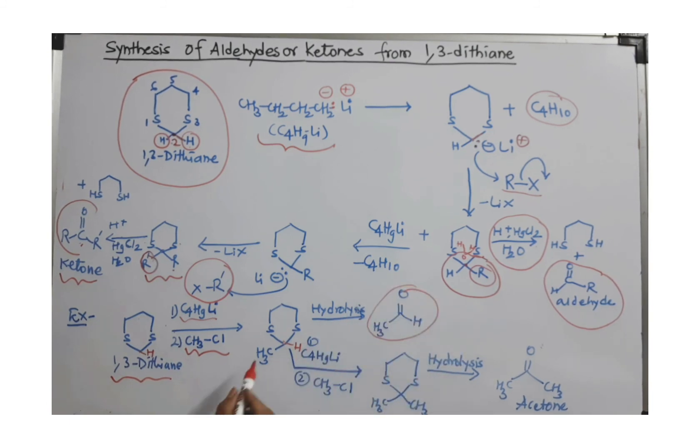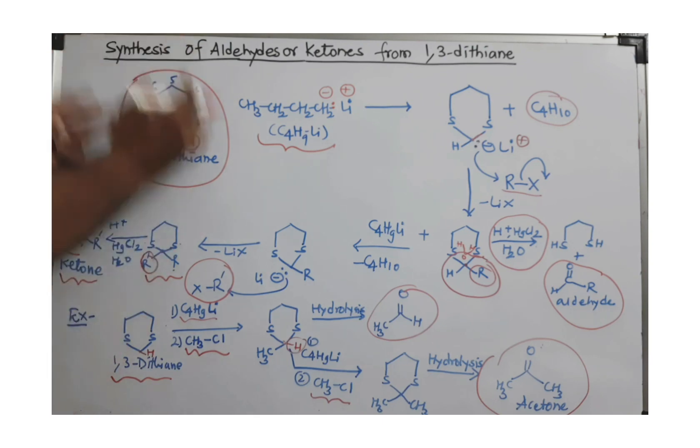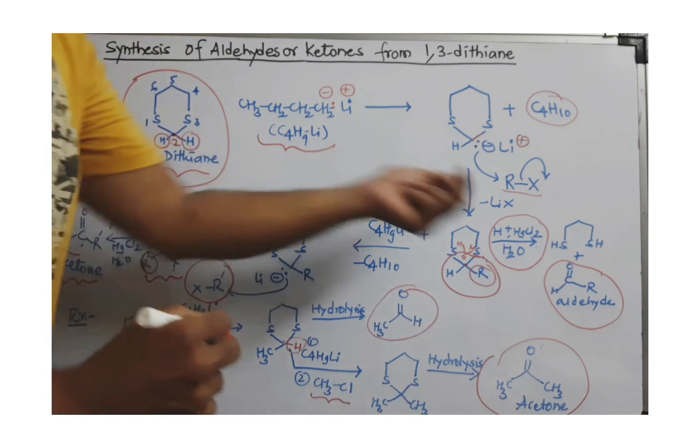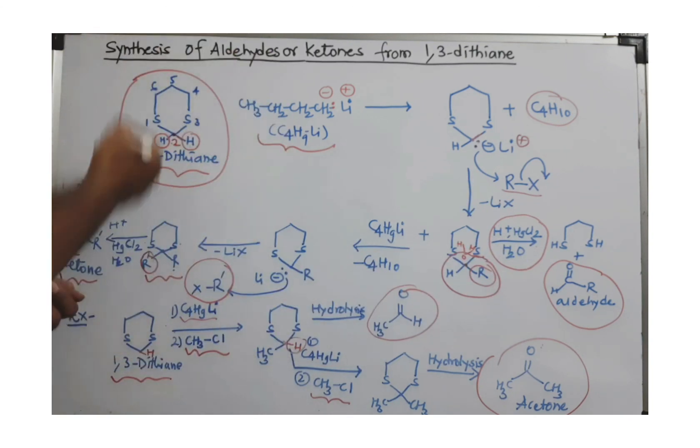Or you can remove even another hydrogen by repeating those steps by using n-butyl lithium and introducing one more methyl group. After hydrolysis, you will get this ketone. In this way, by using one reagent, one species, one molecule, you can prepare aldehyde as well as ketone. This is a very interesting reaction. Thank you so much.